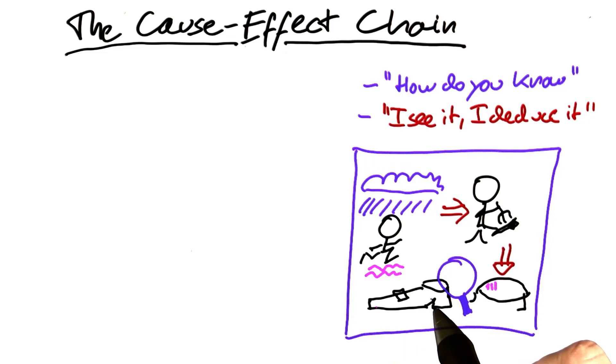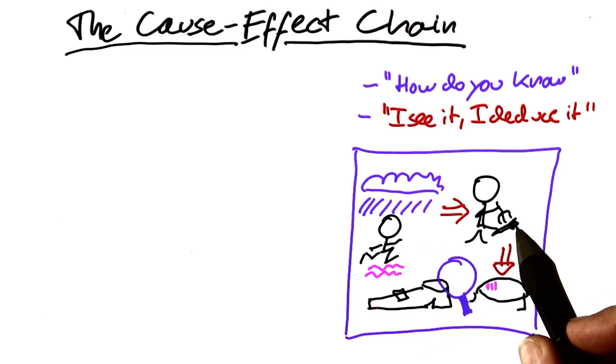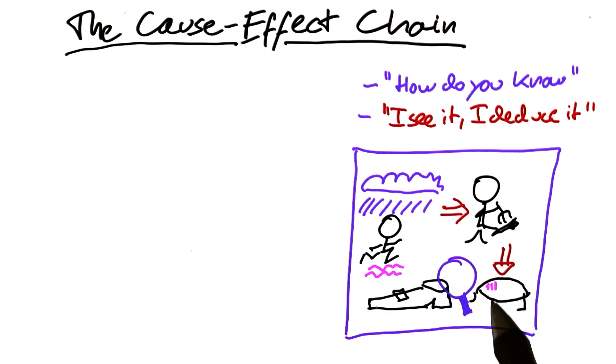What Sherlock Holmes reconstructs in his reasoning over here is a cause-effect chain. First, Dr. Watson ran across mud, therefore the servant had to clean the shoe, and therefore there were scratches found in the shoe.